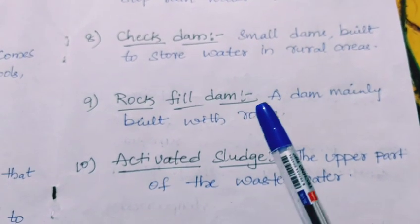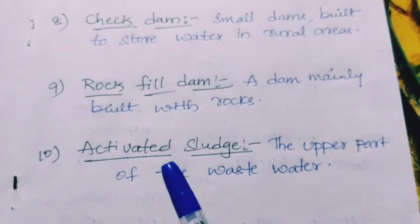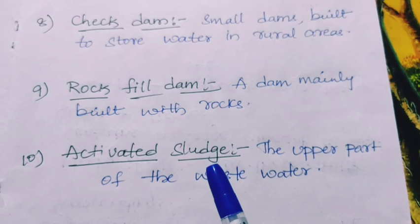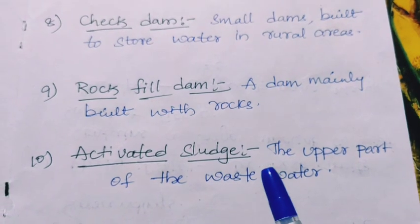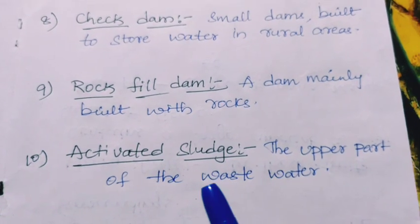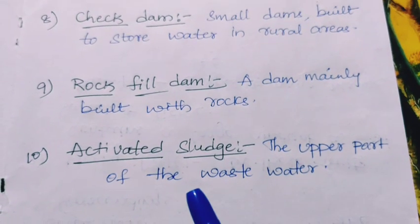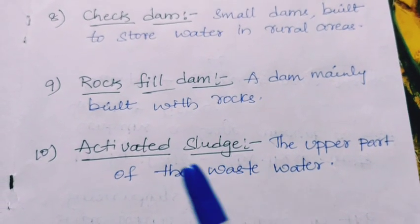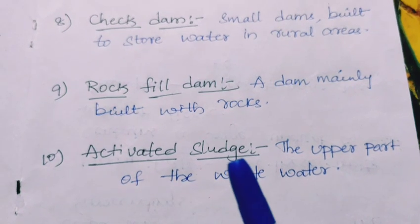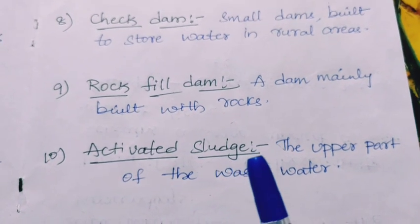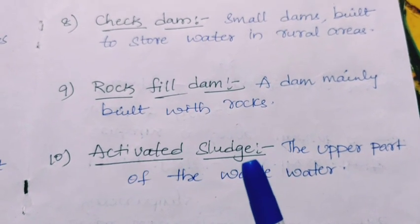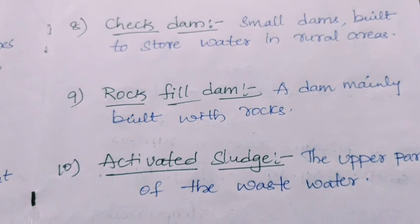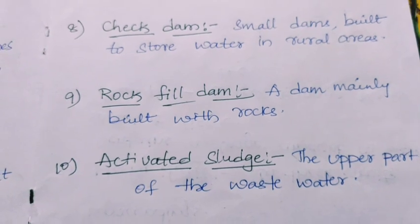Rock fill dam — a dam built mainly with rocks. Last one is activated sludge — the upper part of the wastewater is called activated sludge. Thank you, keep watching Science Innovators.